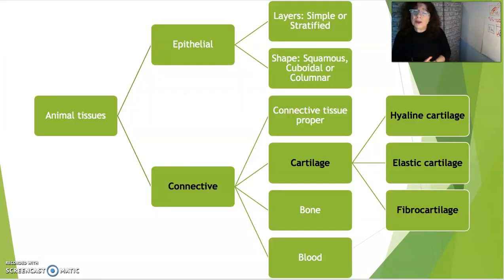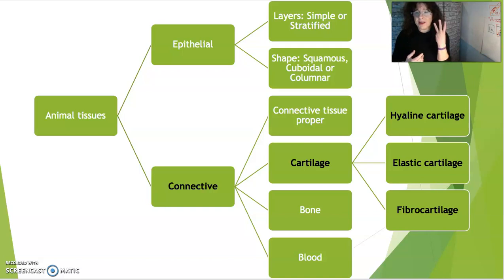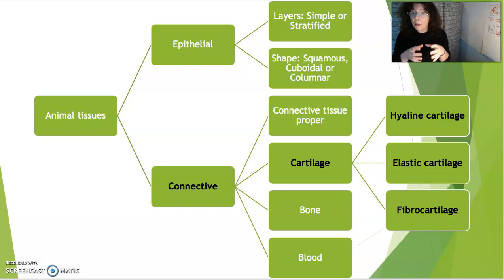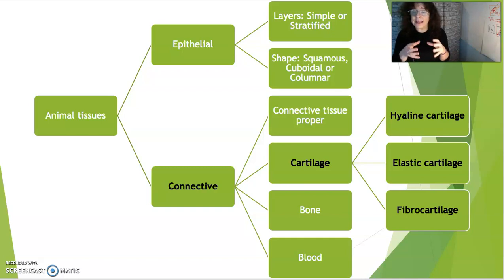When we look at cartilage, we're looking at three types: hyaline cartilage, elastic cartilage, and fibrocartilage. We can divide these three based on the cellular makeup and prevalence of chondrocytes, the ratio of elastin to collagen fibers, and the consistency of the extracellular matrix — whether it is more rubbery, more spongy, or more firm.